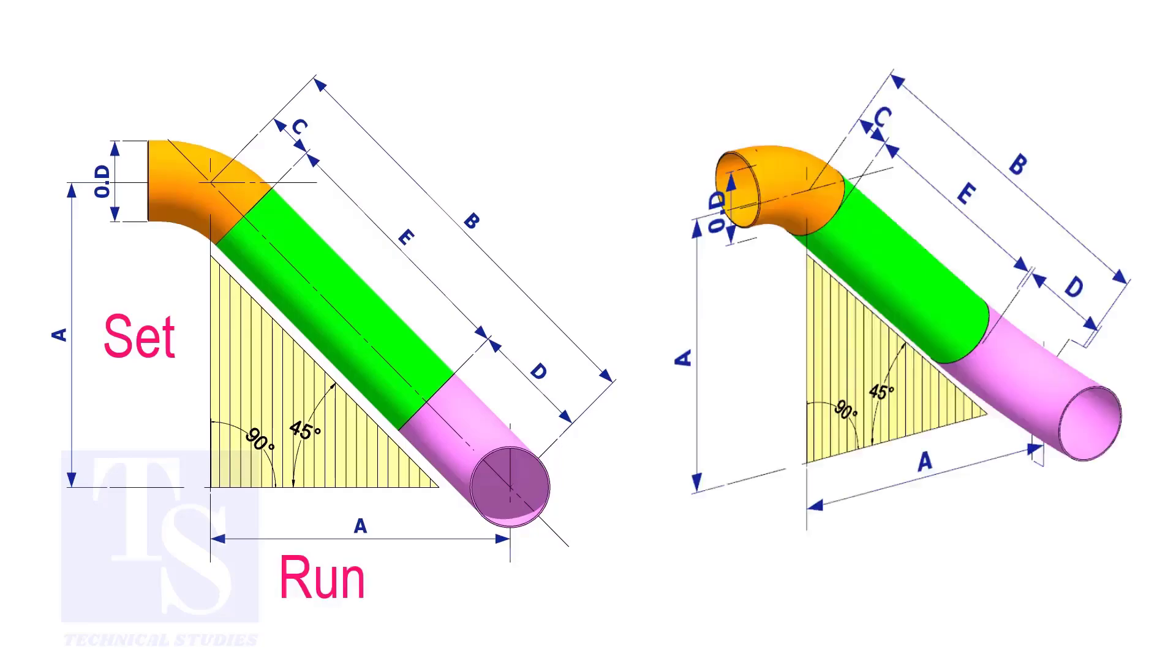In an offset, if the including angle is 45 degrees, the set and the run shall be the same. If the value of the set and the run are equal, the value of the travel is set or run multiplied by 1.414.